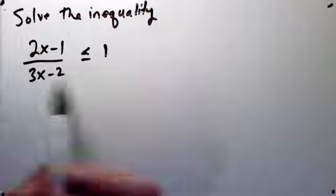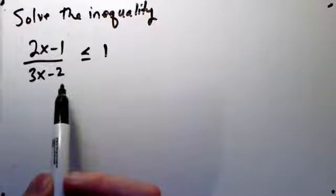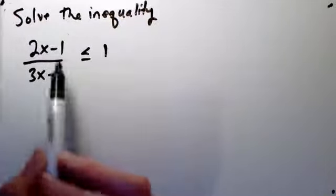If I multiply both sides here by something that's positive, the inequality is preserved. If I multiply both sides by something that's negative, the inequality won't be preserved, it will be reversed.